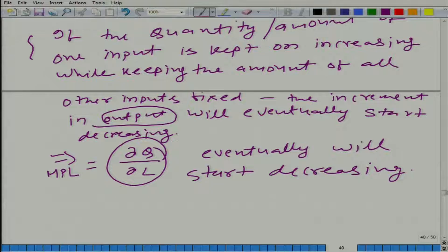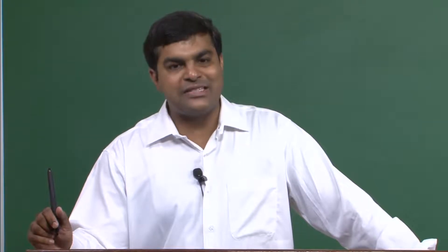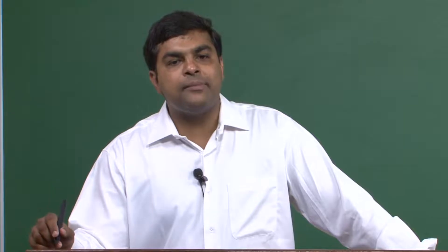A student asks: is the law of diminishing marginal returns only valid for labour? No — for any input. When I gave the definition, I said if the quantity of one input is kept on increasing. So this is true for any production function, even with more than two factors of production. Keep all other factor levels fixed and keep increasing just one input — eventually the incremental output, or marginal product with respect to that input, will start decreasing.